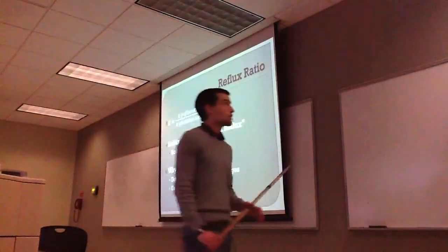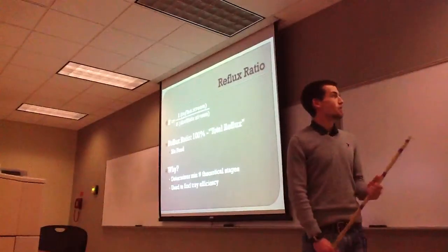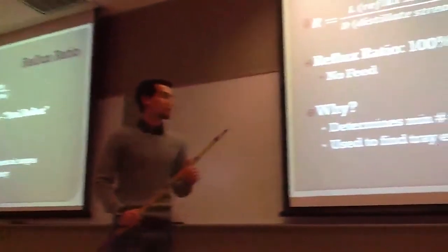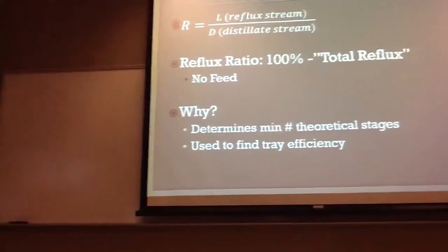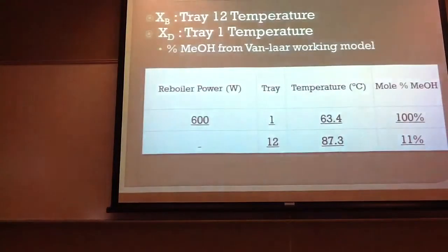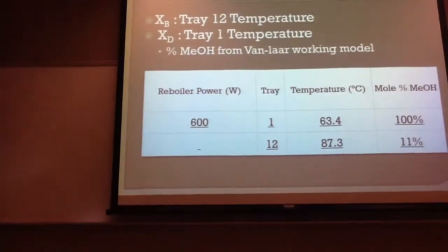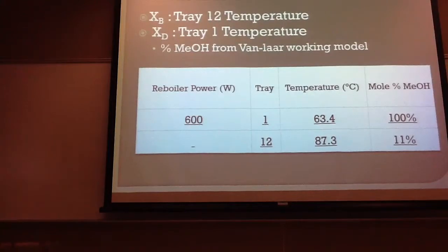The reflux ratio is the reflux stream over the distillate stream, L over D, and we used total reflux with no feed. Why do we use total reflux? It determines our minimum theoretical stages, and we can find our tray efficiency from this. Since we had no feed, distillate collected, or bottoms collected, we took XB and XD to be the tray 12 and tray 1 temperatures.